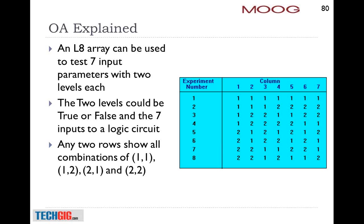What are these orthogonal arrays? Looking at the array shown here, there are seven columns and eight runs. If you take any two columns — say column one and two — all combinations of one-one, one-two, two-one, and two-two have been tested. In orthogonal terminology, this is a two-level orthogonal array because the levels are one and two, and it has seven inputs. So you can look at seven factors with eight experiments. It is known as an L8 array. Orthogonal arrays are available — just Google for them and you will get hundreds which you can use.